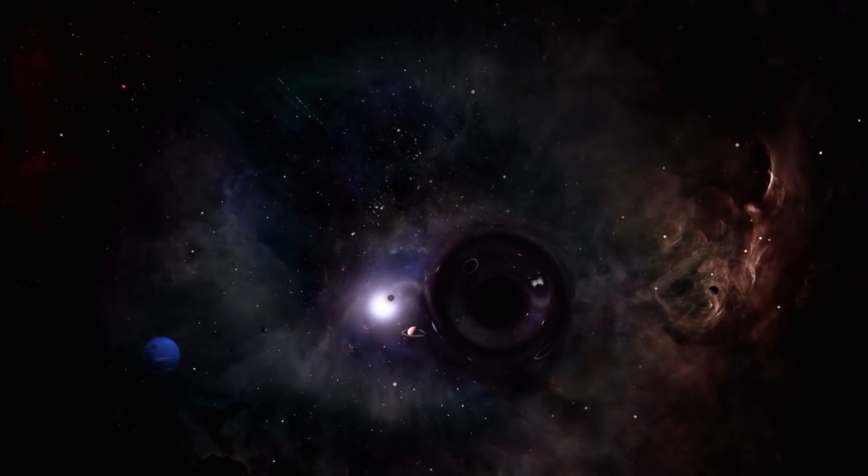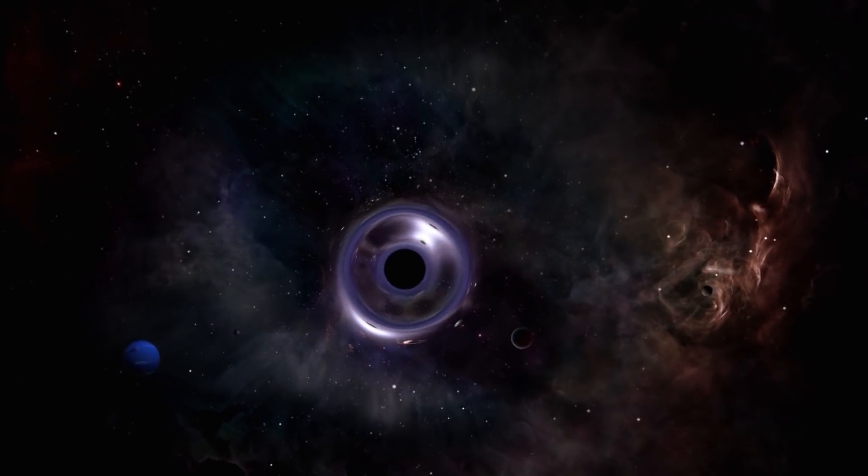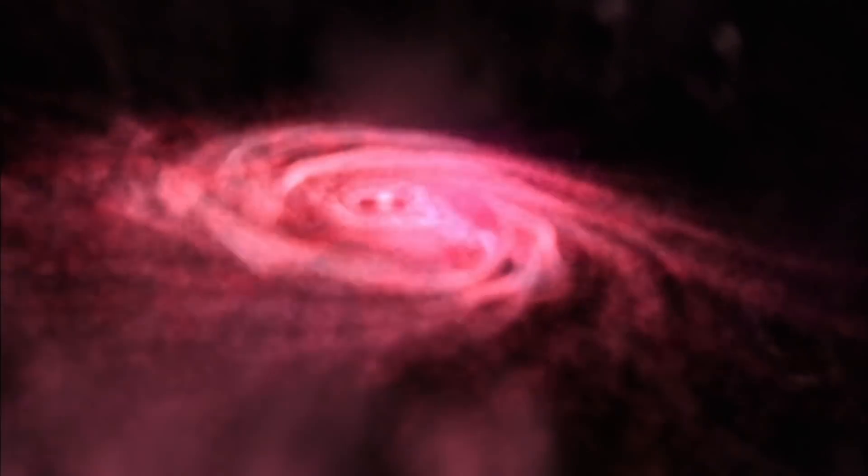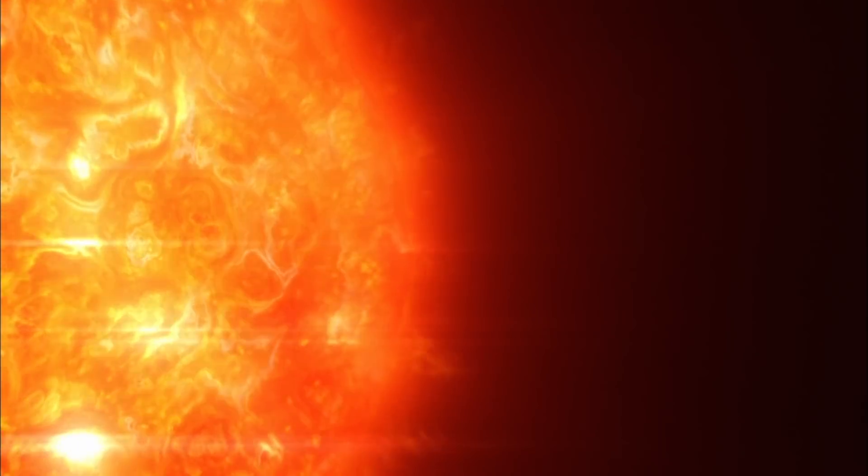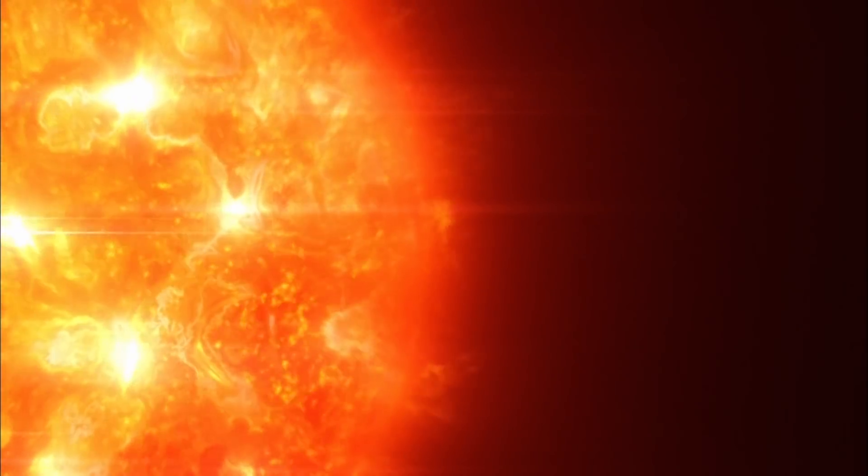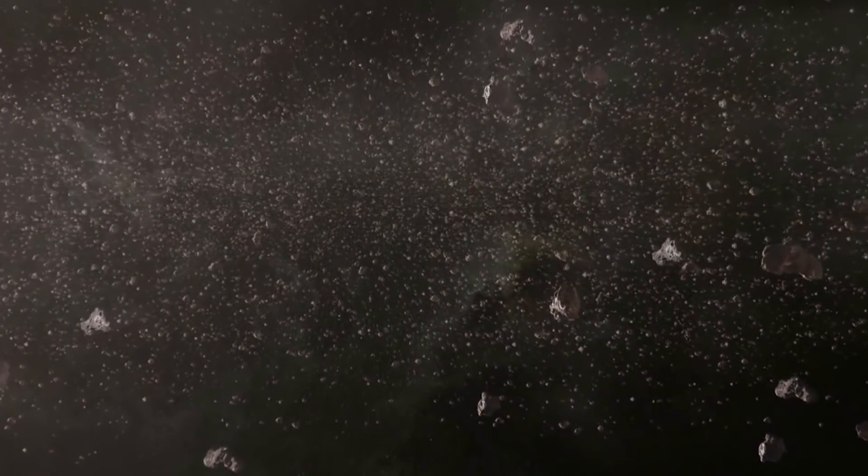If the black hole passed through only this outer part of the solar system, for example, if it were moving too fast to be strongly affected by the Sun's gravitational influence, an increase in comets in the inner solar system might be the only effect we would observe.